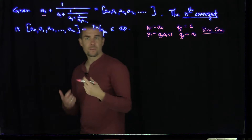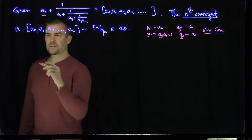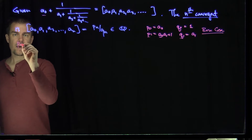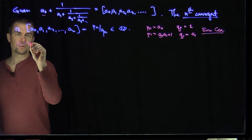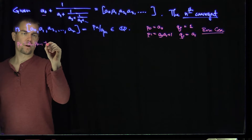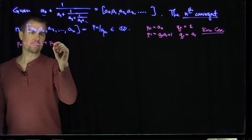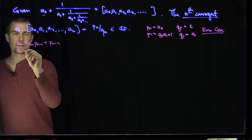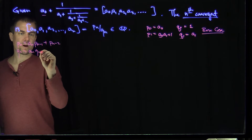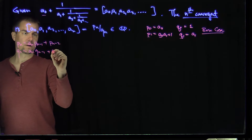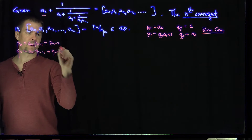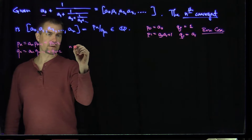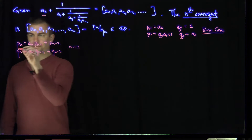Those are my base cases. Now I'm going to define them recursively: pn equals an·pn-1 plus pn-2, and qn equals an·qn-1 plus qn-2. These formulas are valid for n greater than or equal to 2.